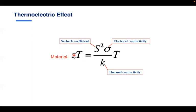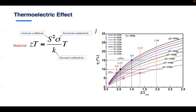The ZT parameter represents the capability of a material to act as a thermoelectrical harvester. An ideal thermoelectric material has high electrical conductivity σ, high Seebeck coefficient S, and low thermal conductivity k, so that Z = S²·σ/k is large, yielding a high ZT coefficient. In thermoelectric literature you typically find plots of efficiency η versus ZT, showing that higher ZT leads to higher harvester efficiency.